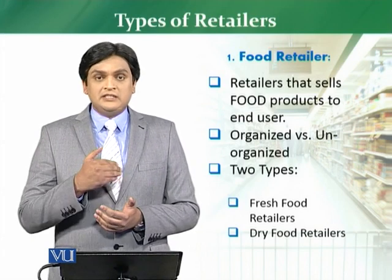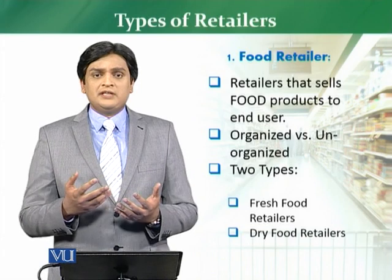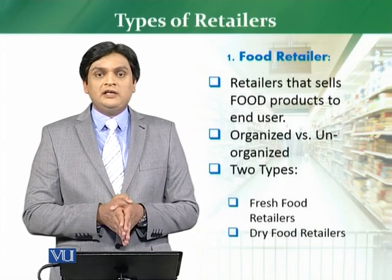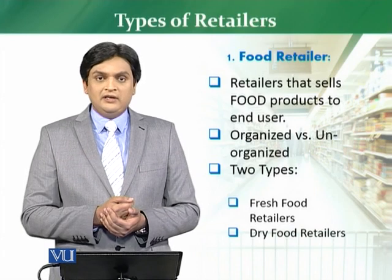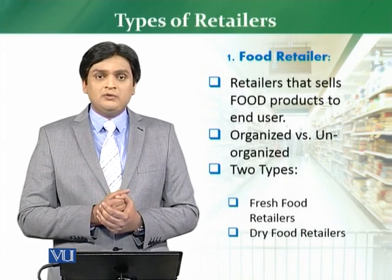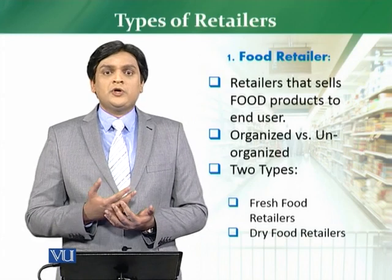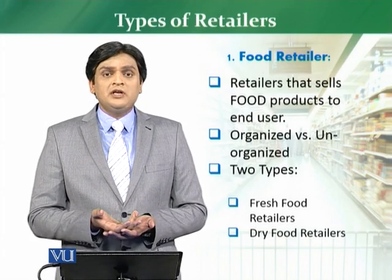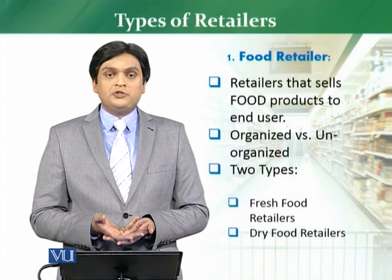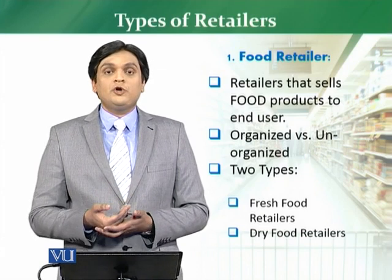On the other hand, if we talk about organized examples, Zenit and Meat One are retailers who sell fresh products and have an organized setup — so they are organized food retailers. For dry food, grocery stores selling products internationally, like 7-Eleven, are one example. In Pakistan, the Utility Store is an example — there are already around 6,000 retail utility stores in Pakistan selling grocery products to consumers. CSD is also an example of a food retailer in Pakistan selling grocery products.